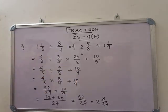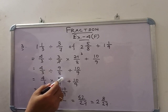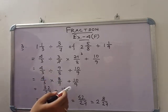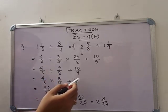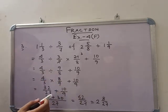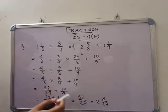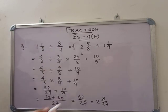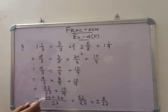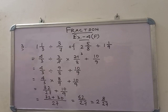Now division: 4 by 3 into 8 by 9 plus 10 by 9. That means 32 by 27 plus 10 by 9. Normal addition, LCM 27: 32 plus 30, that means 62 by 27. That means 2 of 8 by 27.